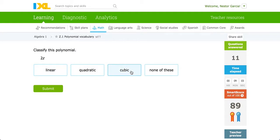Now we are classifying by degree. Let's look for the exponent, invisible exponent, meaning it's a one, or linear in this case.